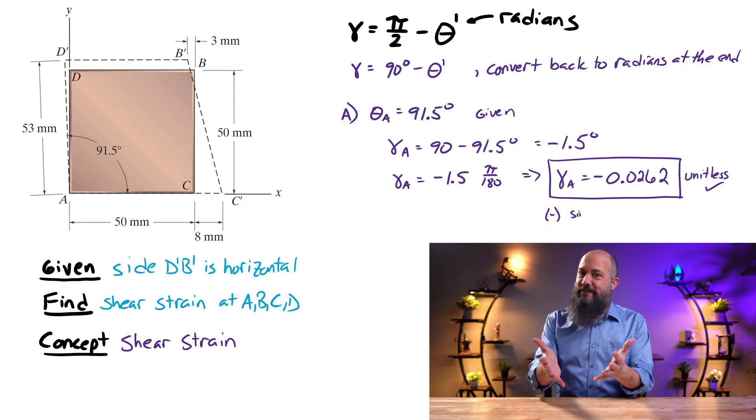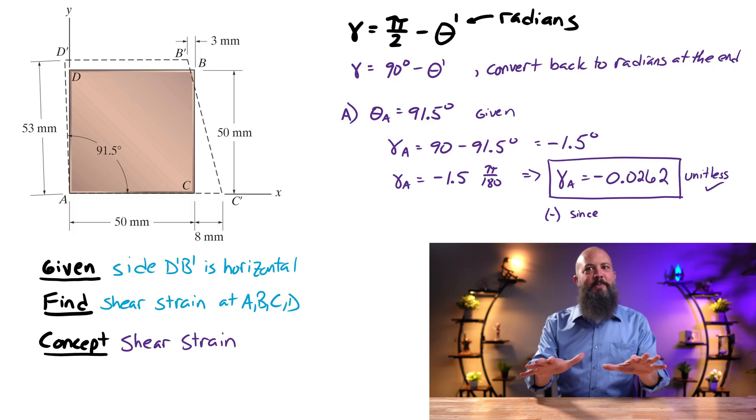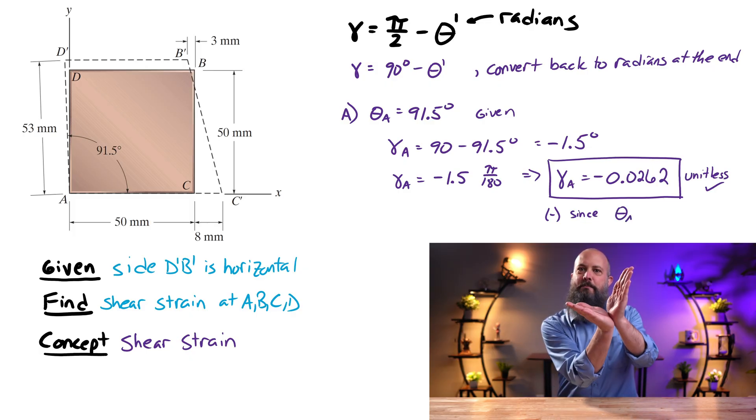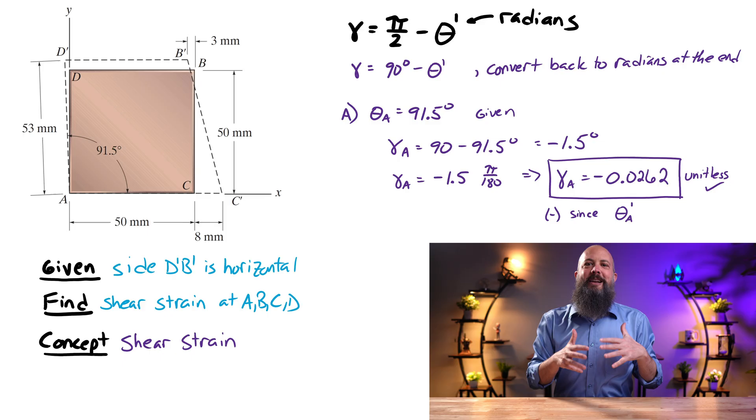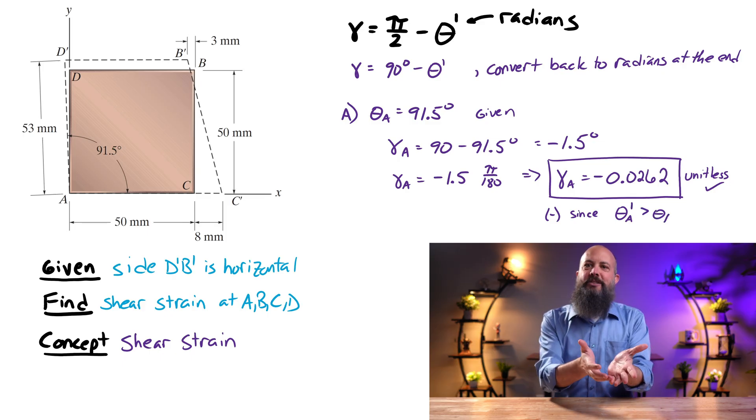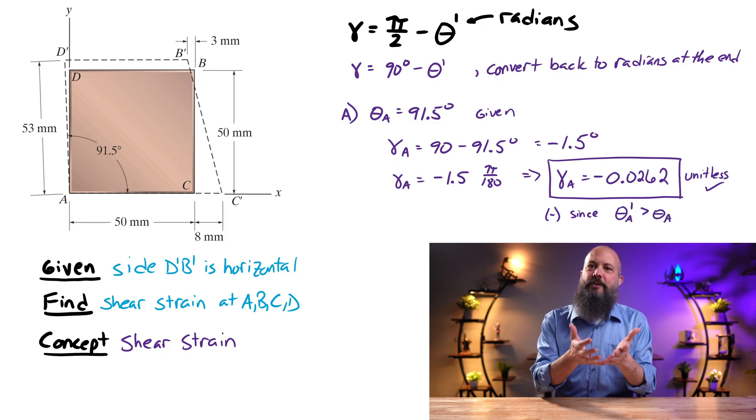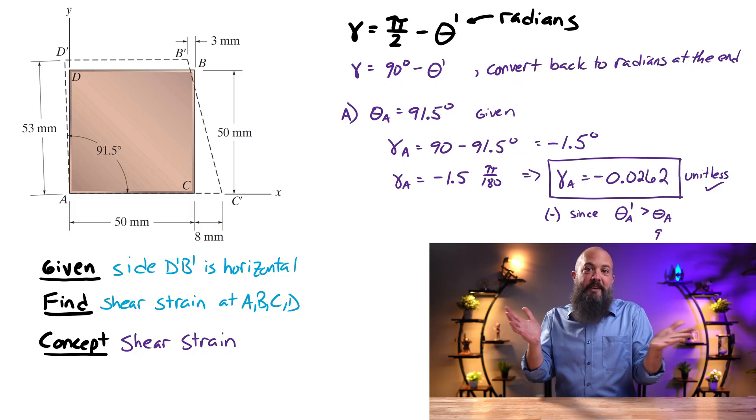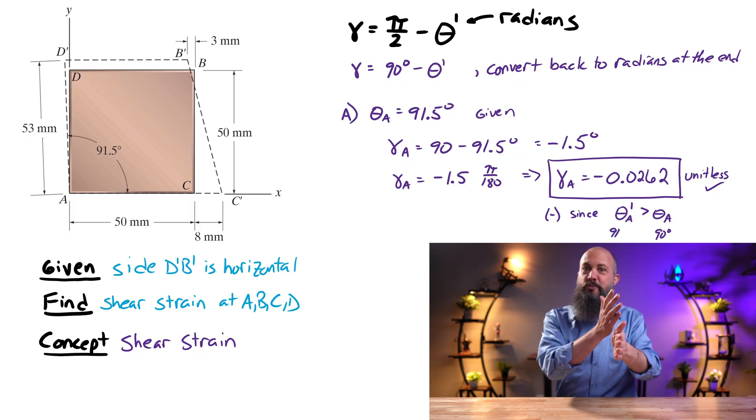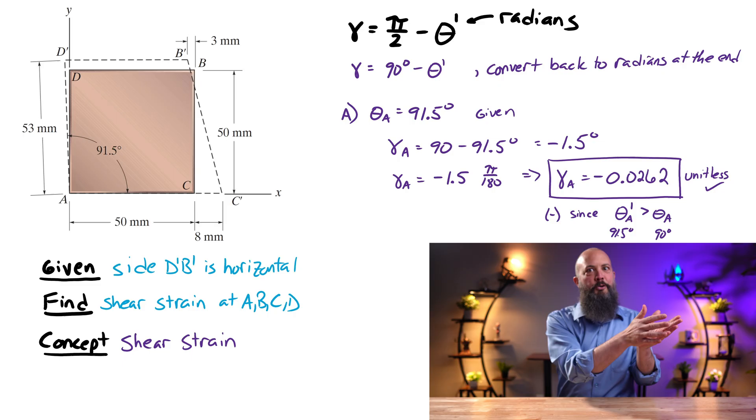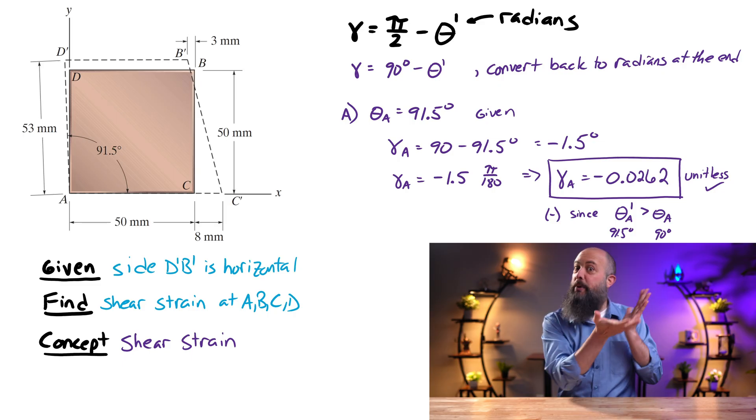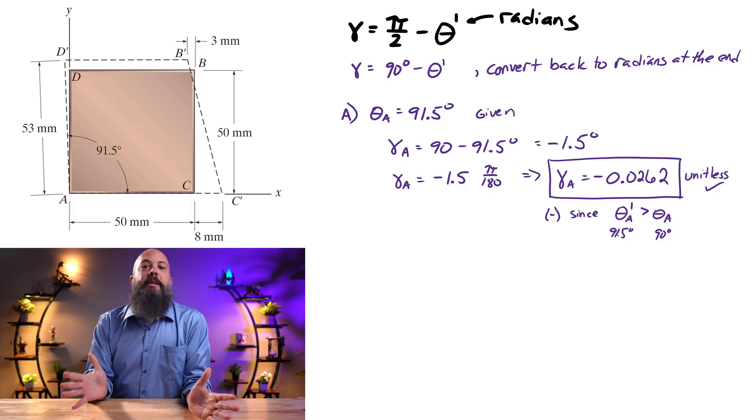Talk to a math professor. They could explain why. And the negative sign is correct because the angle has gotten bigger. Right? When the angle increases, we call that negative strain. It's easy enough to remember because pi over 2 minus the new angle. So if the new angle has gotten bigger, it will be bigger than pi over 2. You'll get a negative answer.